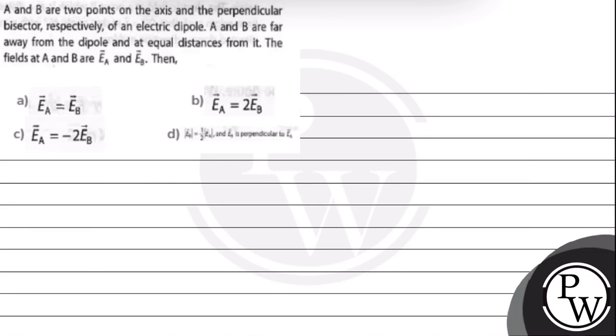Hello with you. Let's read this question. The question says A and B are two points on the axis and the perpendicular bisectors respectively of an electric dipole. A and B are far away from the dipole and at equal distances from it. The fields at A and B are EA vector and EB vector. Then,